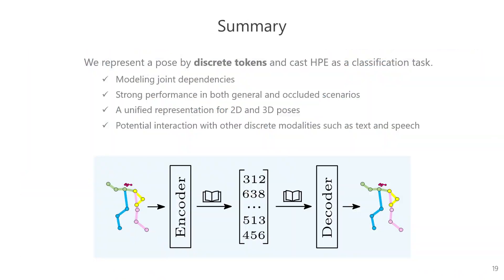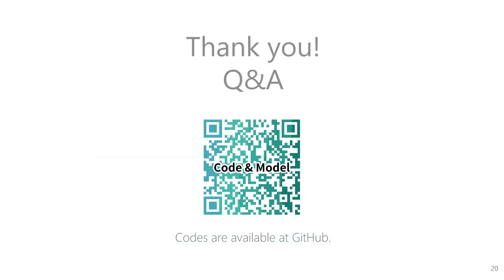In summary, we have proposed a novel pose representation called PCT, which represents poses as discrete tokens and transforms human pose estimation into a classification problem. Our PCT method has achieved excellent performance in both 2D and 3D general scenarios, with particularly prominent results on occlusion datasets. Additionally, the discrete representation of PCT potentially facilitates its interactions with other discrete modalities such as text and speech. You can find our code and model by scanning the QR code. And that's all. Thank you.